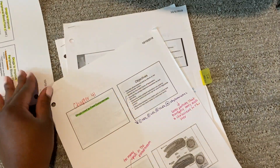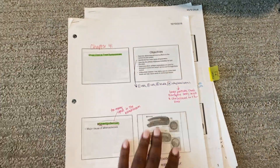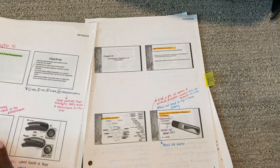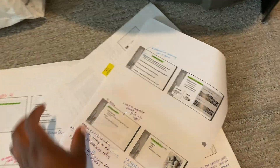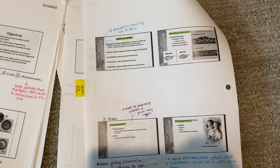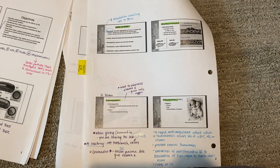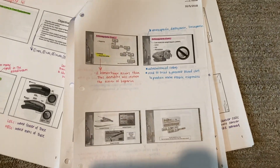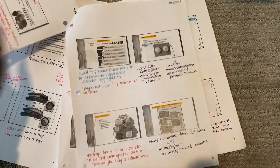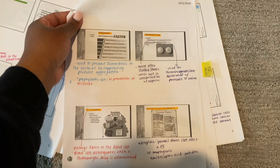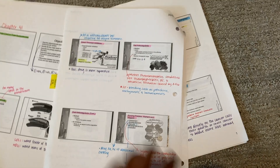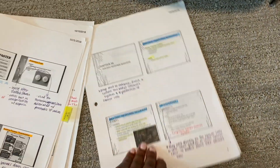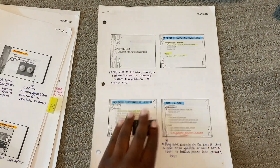How I studied for patho: I mainly used her PowerPoints, reviewed them, and wrote down extra notes that were important. I also listened back to her recorded lectures — I just recorded them on my phone, and when it was time to review, I'd listen back and fill in my notes. I believe I got an A in pathophysiology. It was another class I really enjoyed, like micro.